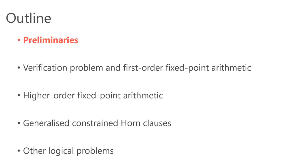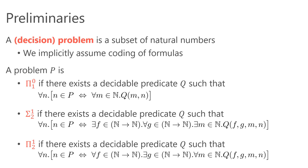This is the outline of the talk. After introducing some notions of computability theory, we give a formal definition of the branching time verification problem, then examine logical approaches one by one. By a decision problem, we mean a subset of natural numbers. We implicitly assume coding of formulas, so each formula is associated with a natural number. We introduce some classes of decision problems. A problem P is Π⁰₁ if there exists a decidable predicate Q such that n belongs to P if and only if for all natural numbers m, Q(m,n) holds.